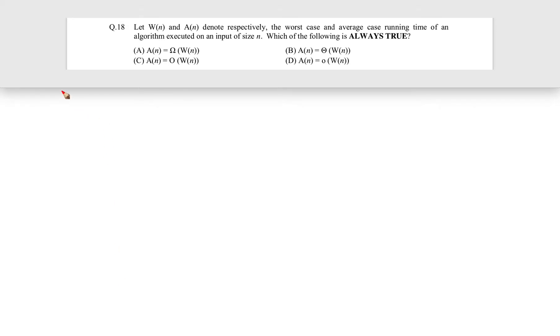Okay, now let's see this question. This question came in GATE 2012 for one mark. The question is: let w(n) and a(n) denote respectively the worst case and average case running time of an algorithm executed on an input of size n. Which one of the following is always true? So they are talking about worst case and average case running time.